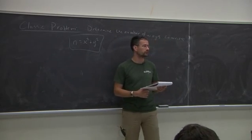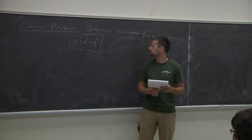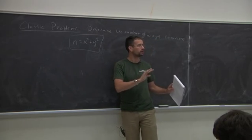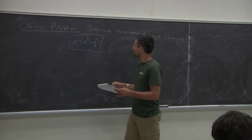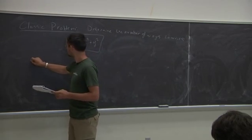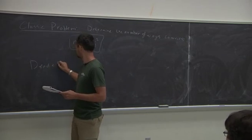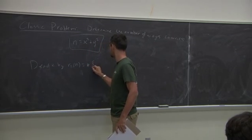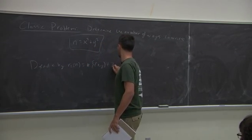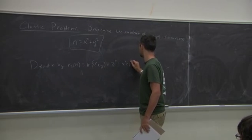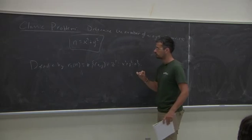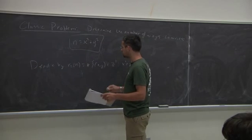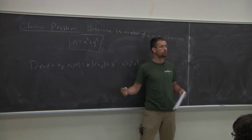Certainly not all numbers are expressible as the sum of two squares. We can denote by R2 of n the number of ways to write n as a sum of two squares. In general, this is a very hard question to figure out what R2 of n actually is equal to.